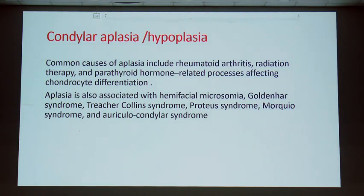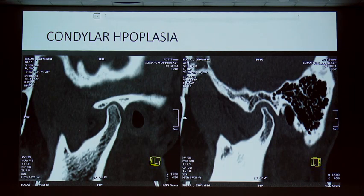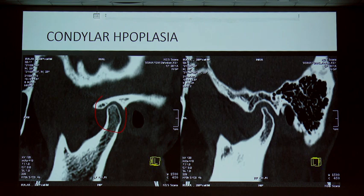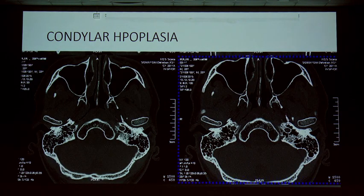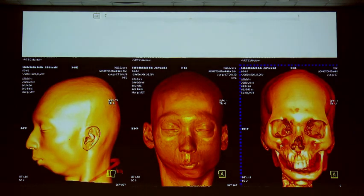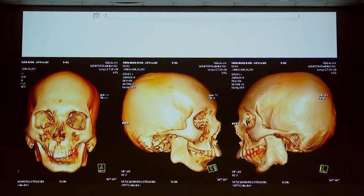Congenital condylar abnormalities may present as hypoplasia or aplasia. Associated syndromes include Goldenhar syndrome, Treacher Collins syndrome, Proteus, and Morquio syndrome. A hypoplastic condyle is much smaller in size, making it more prone to derangement and degeneration. 3D facial reconstruction beautifully demonstrates hemifacial hypoplasia — classical features of Treacher Collins syndrome.